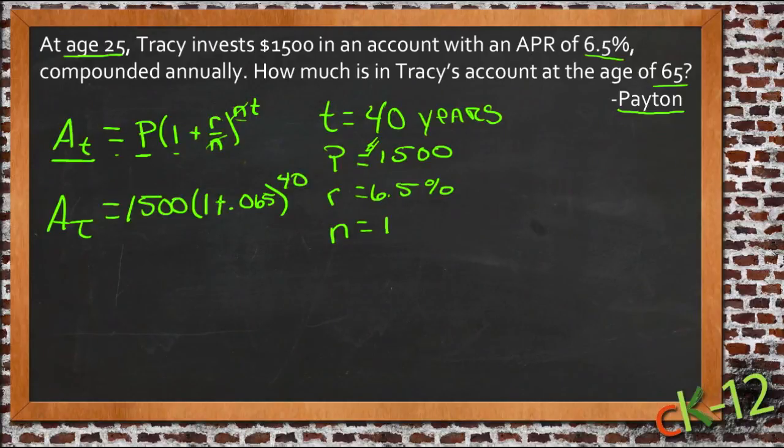So we have a simplified version of that same expression because we didn't have to worry about the number of compounds. Now we just need to take 1 plus 0.065 to the power of 40 on a calculator, so if we do 1.065 and raise that to the power of 40, we get 12.416.